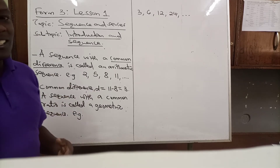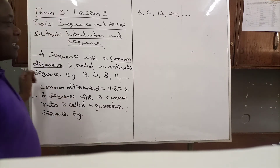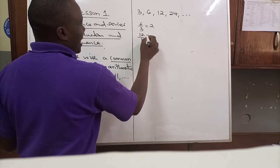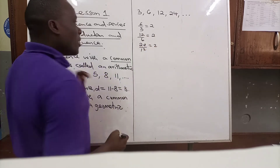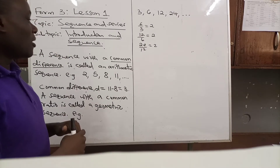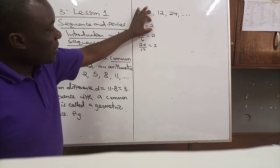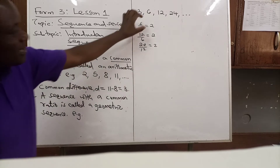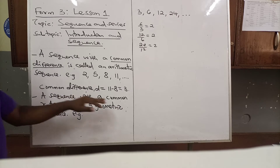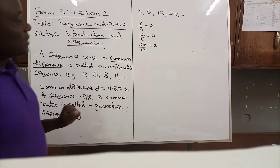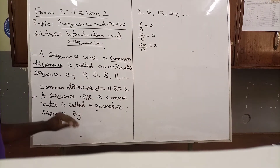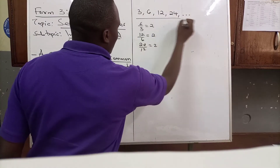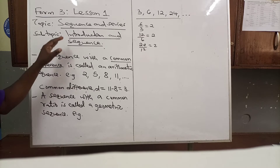What if we divide instead of subtracting? If you take 6 divided by 3 you get 2; 12 divided by 6 you get 2; 24 divided by 12 you get 2. When you divide consecutive terms of this sequence you obtain a number that is common. That number is called a common ratio. Since the ratio is constant, this sequence is called a geometric sequence because it contains a common ratio.